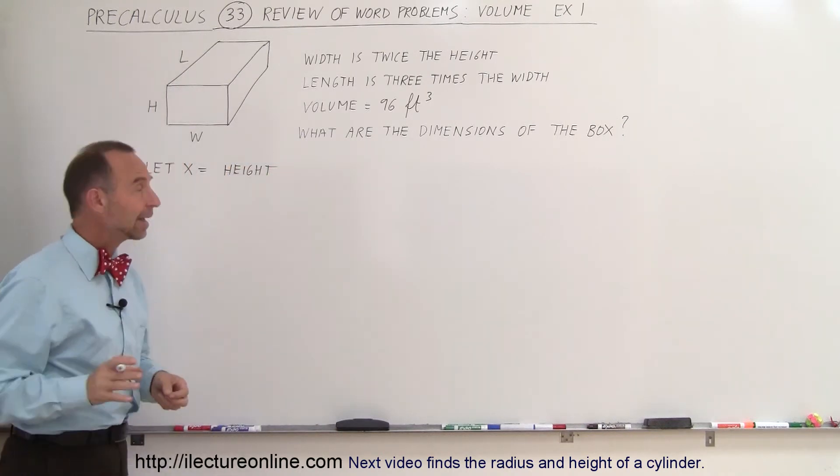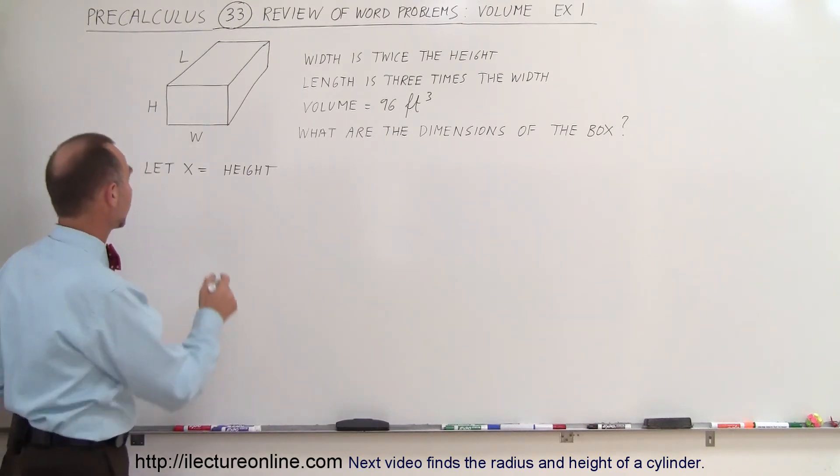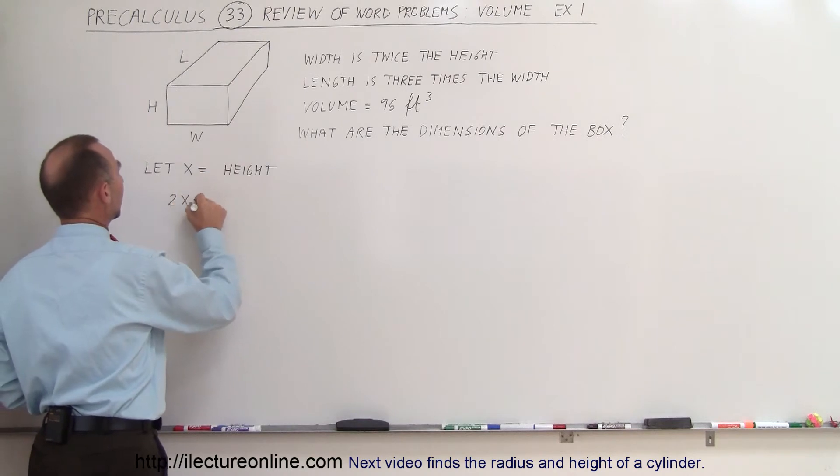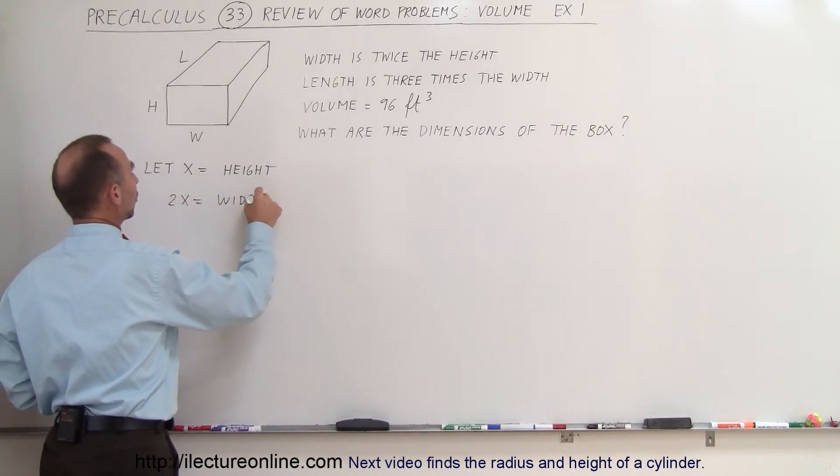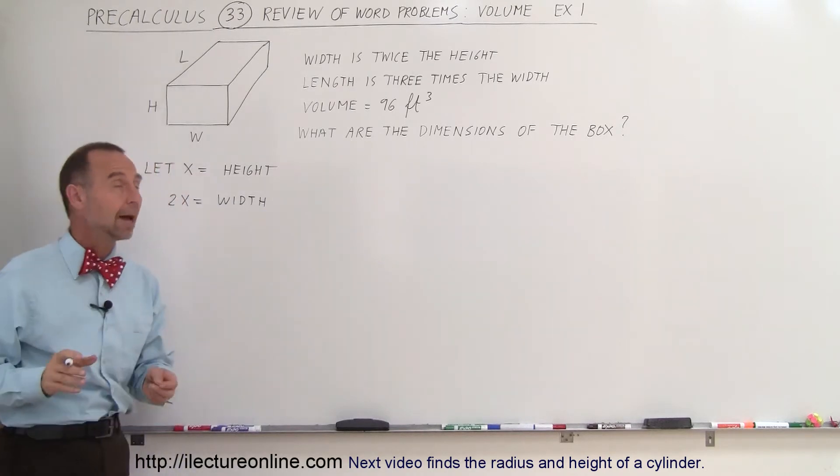Okay, if x is the height and we say that the width is twice the height, that means the width must therefore be 2x. So 2x equals the width, because we're told that the width is twice the height, the height is x, therefore 2x is the width.